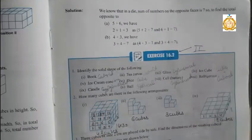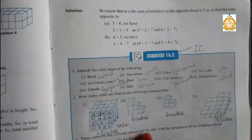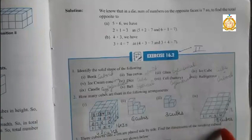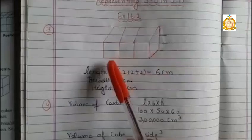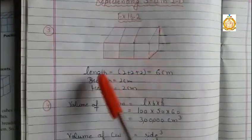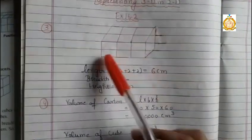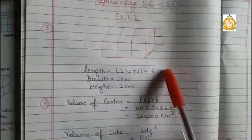Next, 3 cubes of side 2 cm are placed side by side. Find the dimension of resulting cuboid. Students, 3 cubes are placed: 2 cm, 2 cm, 2 cm. That means the length is 2 plus 2 plus 2 equals 6 cm.